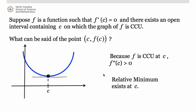Notice what we're doing here: we are looking at the sign of the second derivative at the critical number to help us determine first whether the curve is concave up or concave down at that point, and then also whether we have a relative max or a relative min.